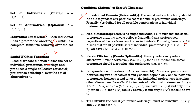The fourth condition is independence of irrelevant alternatives — the social preference between any two alternatives x and y should depend only on individual preferences between x and y, not on preferences involving other alternatives. The fifth is transitivity — the social preference ordering must be transitive: if x is preferable to y and y to z, then x should also be preferable to z.